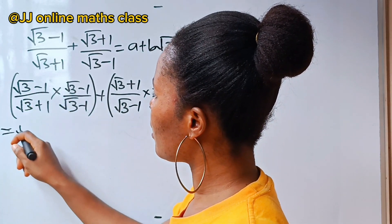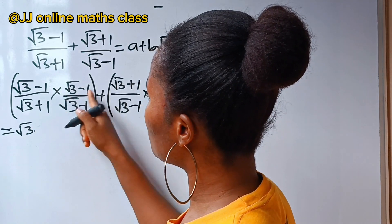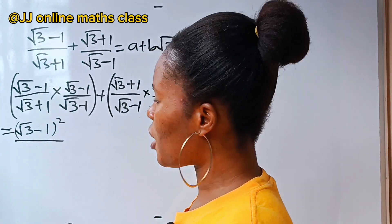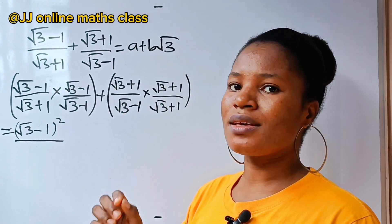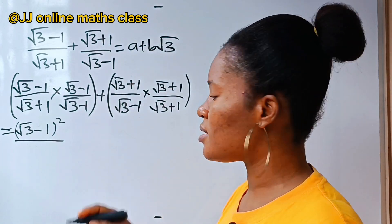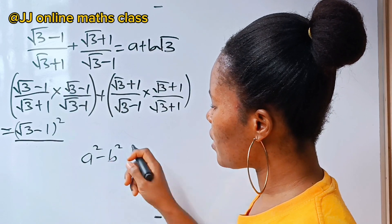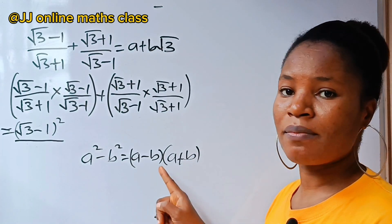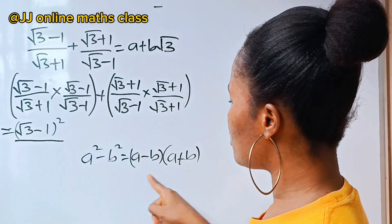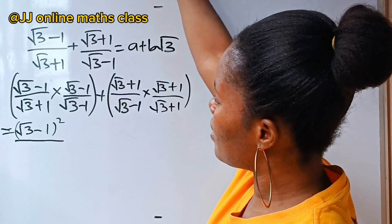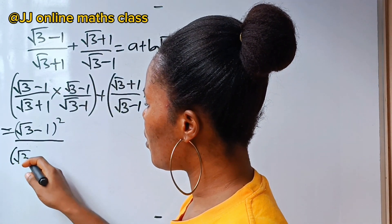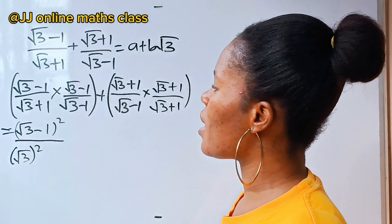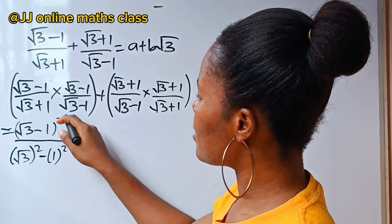Concentrating on the left-hand side: root 3 minus 1 times root 3 minus 1 is the same as root 3 minus 1 squared, divided by root 3 plus 1 multiplied by root 3 minus 1, which is a difference of two squares. The algebraic identity states a squared minus b squared equals a minus b times a plus b. So our denominator becomes root 3 squared minus 1 squared, where a is root 3 and b is 1.